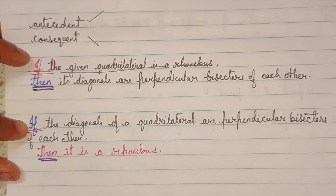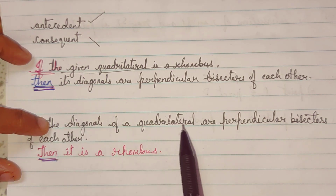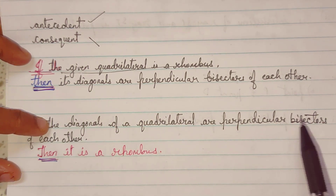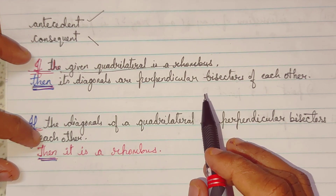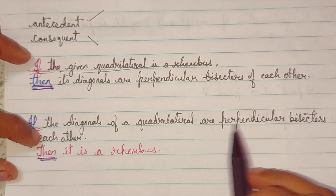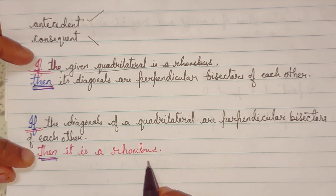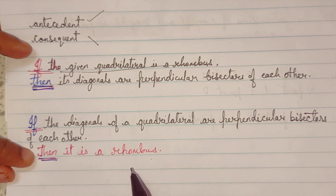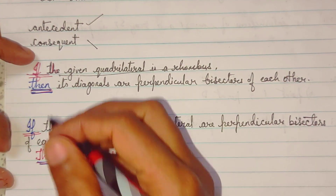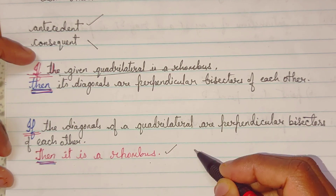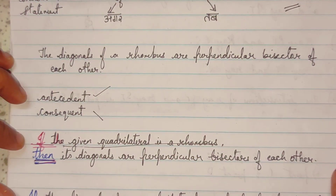The consequent becomes the new antecedent, and the antecedent becomes the new consequent. So the converse is: if the diagonals of a quadrilateral are perpendicular bisectors of each other, then it is a rhombus. We reversed it — made the converse. In both cases, we got true; both statements are true.